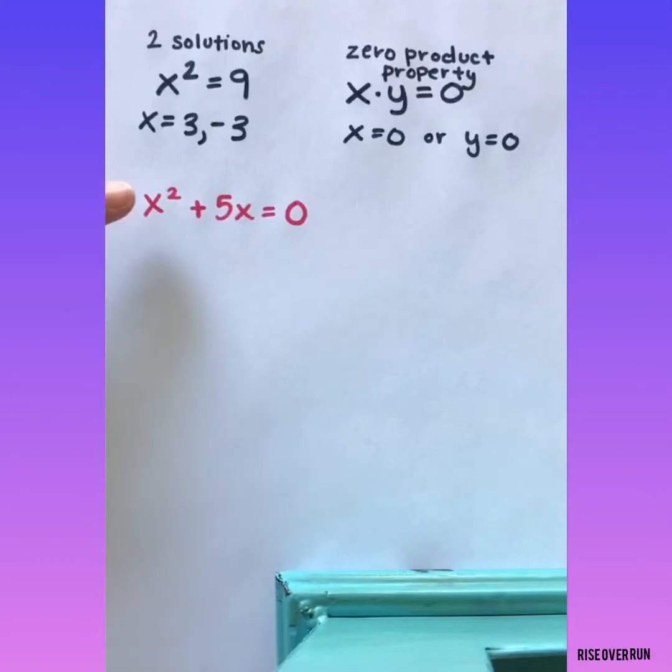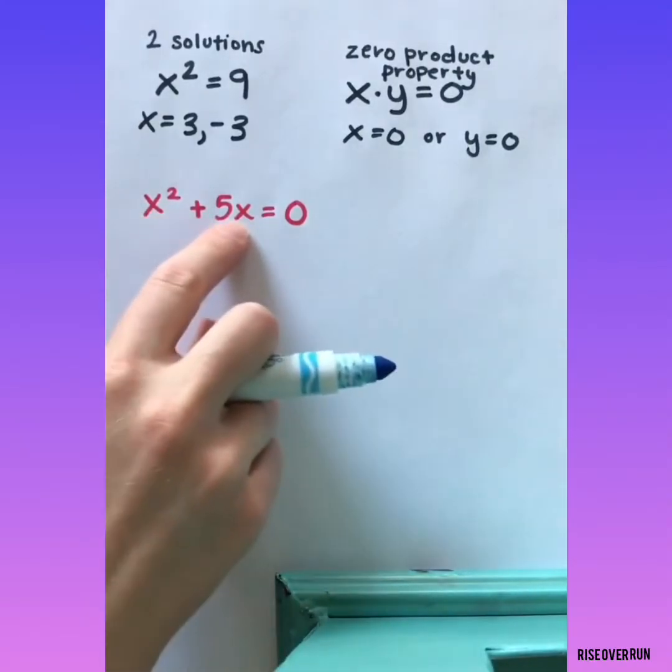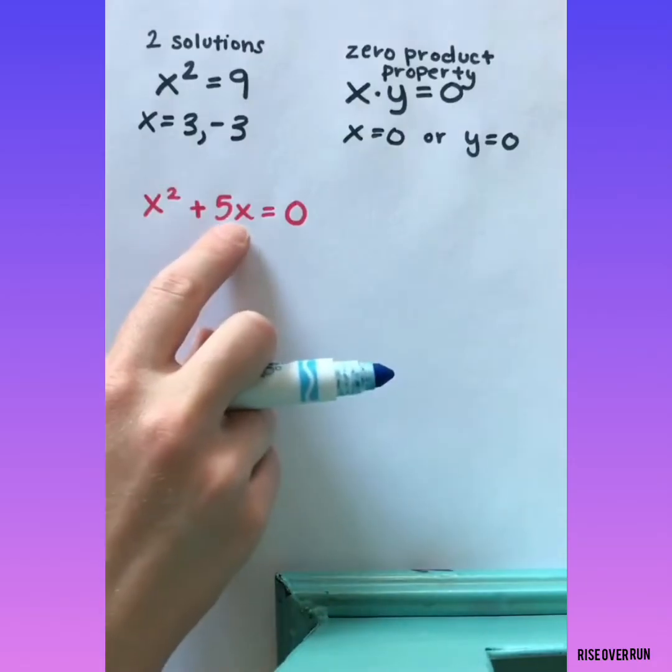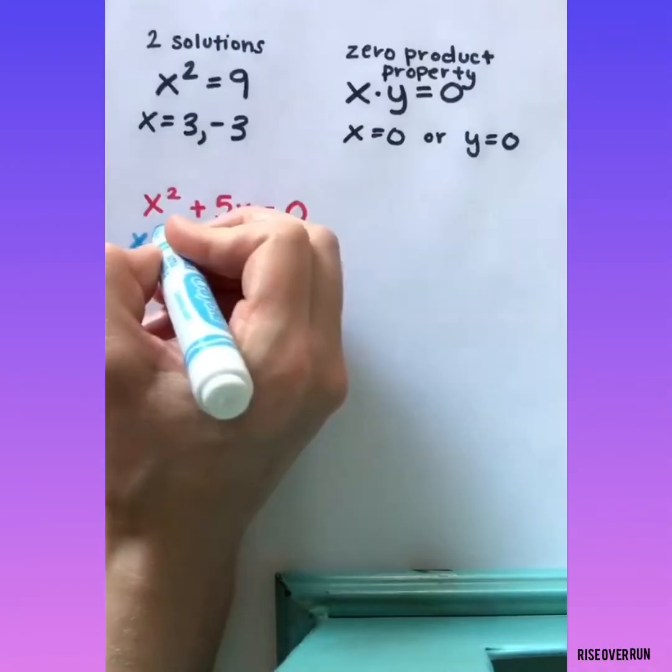Let's look at this quadratic. We're going to factor it and use the zero product property in order to find the two solutions. Looking at everything on the left side, we want to see if we can factor anything. Since both terms have an x, let's factor an x out of both terms.